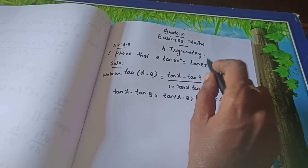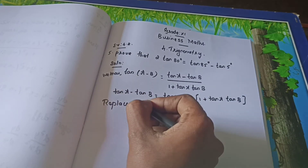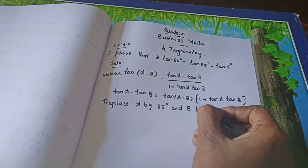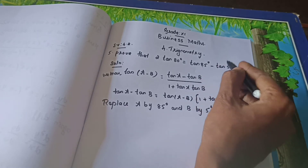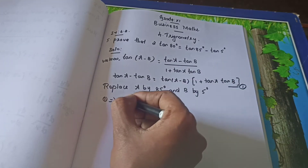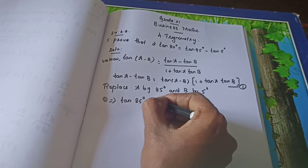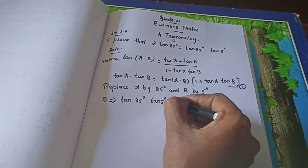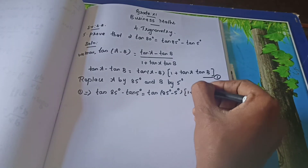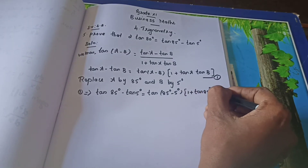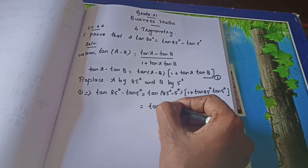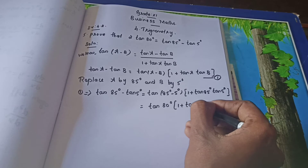So now we are going to replace a by 85° and b by 5°. Understand? So a is 85° and b is 5°. Now we are going to replace. So, implies: tan 85° minus tan 5° equals tan(85° - 5°) into 1 plus tan 85° tan 5°. That equals tan 80° into 1 plus tan 85° tan 5°.